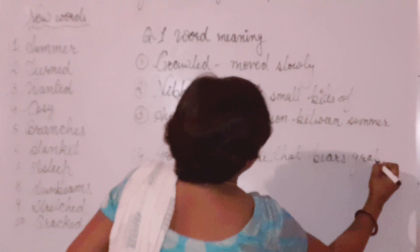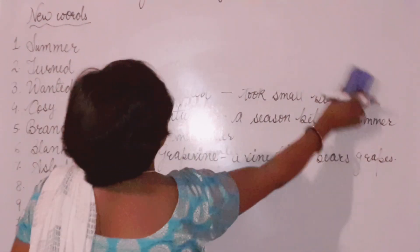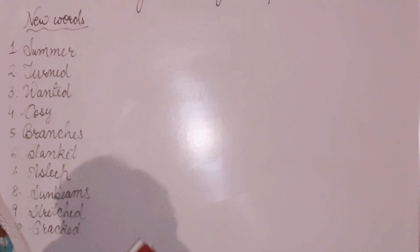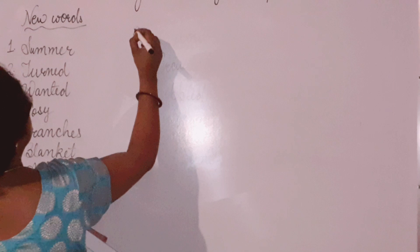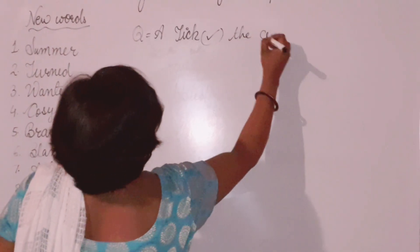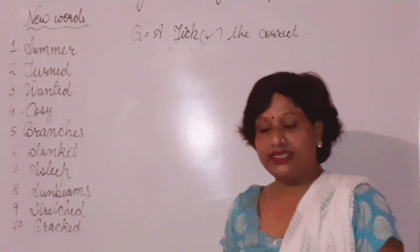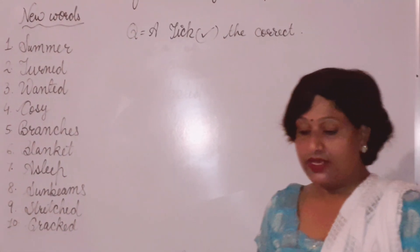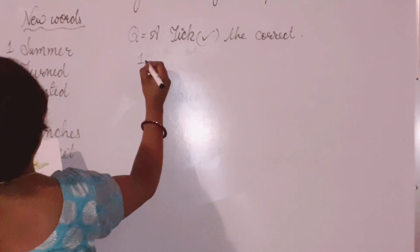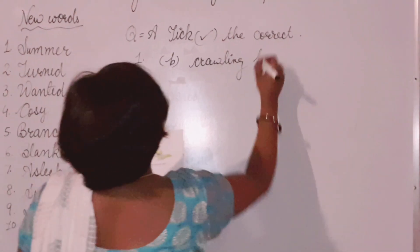Now I am telling you the pick-the-correct exercise from your book — question A. See carefully. The first question is: Jo was tired because she had been — eating leaves, playing in the rain, or crawling for many days? The correct answer is option B — she had been crawling for many days, isliye woh thak gayi thi.